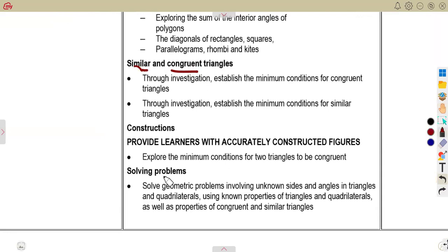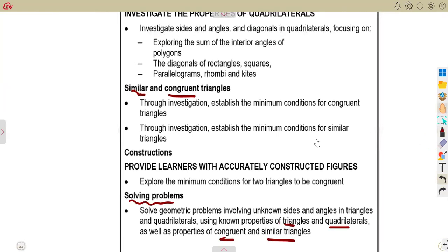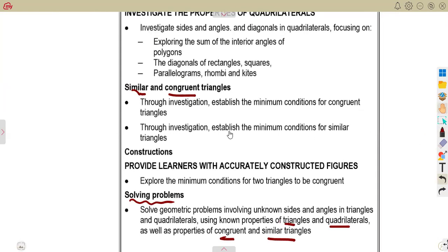Then also solve geometric problems involving unknown sides or unknown angles in triangles and quadrilaterals using known properties of triangles and quadrilaterals, as well as properties of congruent and similar triangles. Use any of the properties: the interior angles in a triangle which add up to 180 degrees, or the angles in a quadrilateral which add up to 360 degrees. You must be able to solve problems relating to that.